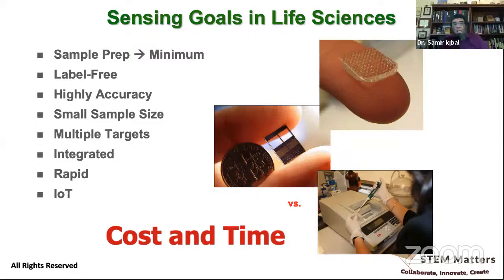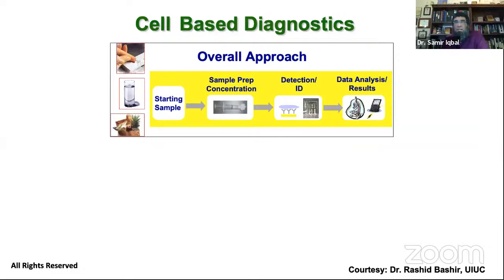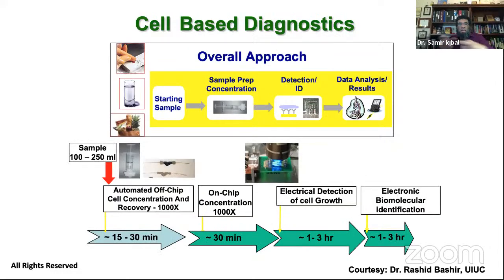This is the overall concept and wish list we want to achieve. The basic approach is: we start with a sample from a living thing — human, water supply, or food supply — we prepare it, get the important components together, and put it on a chip. On the chip is where we have detection, identification, and selective recognition — an important concept we'll discuss — and then we get the result.